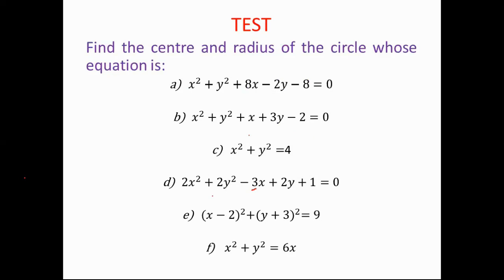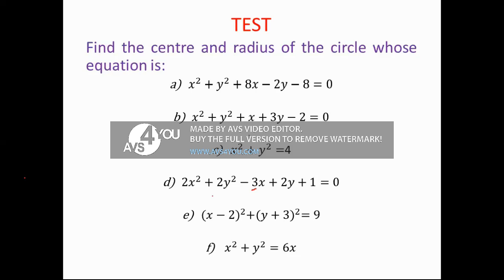Now determine the center and radius of the following questions — let's do question A, C, D, and E. For question E: what is the center? Two and negative 3. What is the radius? Three — correct.